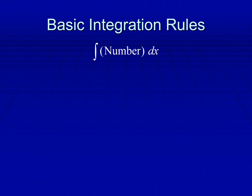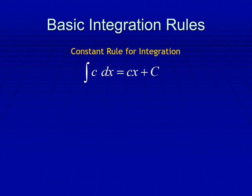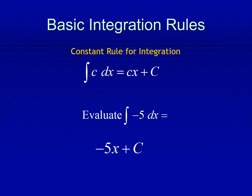So let us have the basic integration rules. The anti-derivative of a number dx is equal to the number times x plus C, so whatever the constant or the number. To evaluate the anti-derivative of 2 dx, it is equal to 2x plus C. Now let us have the constant rule for integration: the anti-derivative of c dx is equal to cx plus C. Always remember when you write C, it is a capital letter. So to evaluate the anti-derivative of negative 5 dx, we have negative 5x plus C.